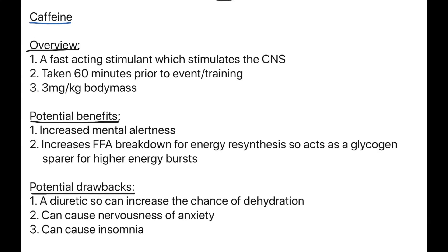Next is caffeine. Caffeine is a fast-acting stimulant which stimulates the central nervous system (CNS). You take it approximately 30 minutes prior to the event or training, and you should take three milligrams per kilogram of body mass — so if you weigh 80 kilos, that's 240 milligrams. Potential benefits include increased mental alertness and quicker decision making, and it increases free fatty acid breakdown for energy resynthesis in the aerobic energy system.